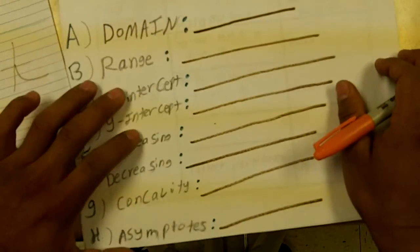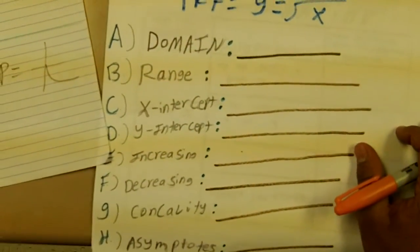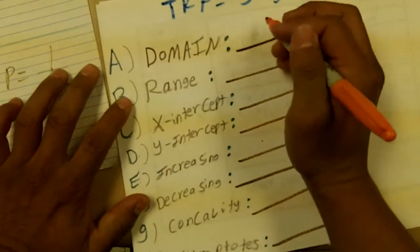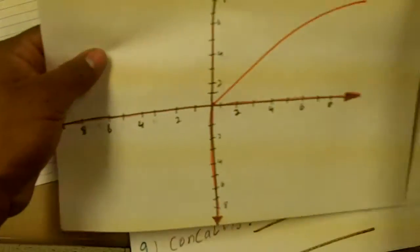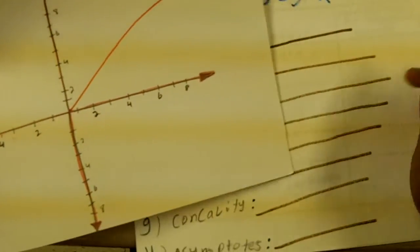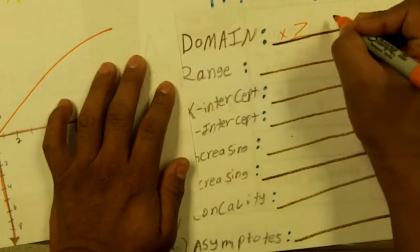Some characteristics of this is that the domain for the x value, it's only going through all the x. So x is greater than or equal to zero.